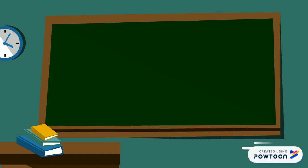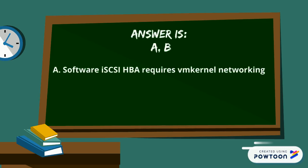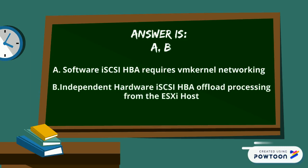The answer is A and B. A: Software iSCSI-HBA requires VM Kernel Networking, and B: Independent Hardware iSCSI-HBA offloads processing from the ESXi Host.